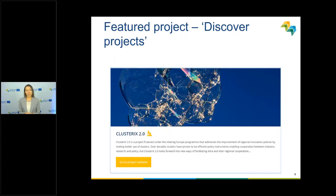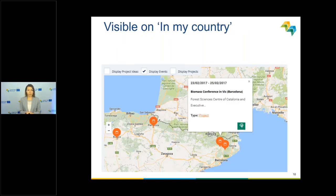Every month we also feature a project on the 'Discover Project' page. In the future, when your website is richer content-wise, it will be featured there too. We typically feature one project per month and advertise it in our newsletter, generating more traffic for the project. On the program website there is also a 'My Country' section where information is automatically generated from the project website, showing which projects are related to a specific country.